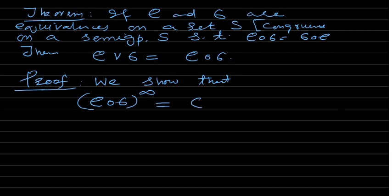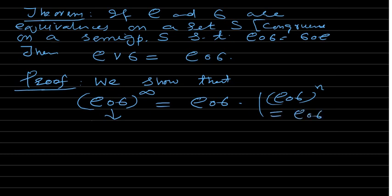By definition, rho composition sigma power infinity is the union of rho composition sigma power n. So you need to prove that rho composition sigma power n equals rho composition sigma for any power n. When you take the union of all these — power 1, power 2, power 3, and so on varying n — each term is just rho composition sigma. So the union of identical sets is rho composition sigma itself.